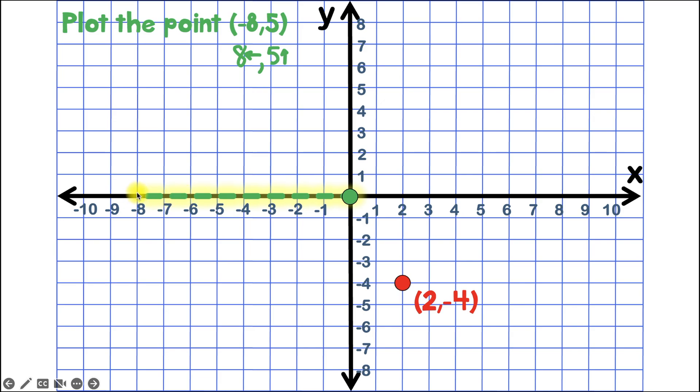Now from here, I'll go 5 units up. 1, 2, 3, 4, 5. And then we'll just plot our point. And it's always a good idea to write the location next to the point. So right next to this, we'll write negative 8, 5.